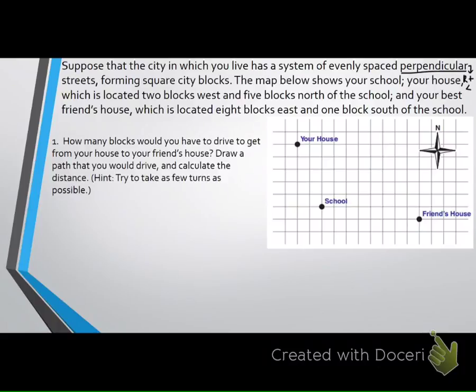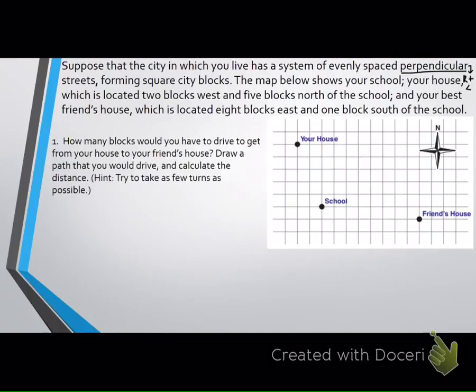The map below shows you your school, your house, which is located two blocks west and five blocks north of the school, and your best friend's house, which is located eight blocks east and one block south of the school. So how many blocks would you have to drive to get from your house to your friend's house? Draw a path that you would drive and calculate the distance. Think about this. Go ahead. You cannot cut through if you're driving, remember this. You cannot cut through a neighborhood. These are your streets. These lines are your streets.